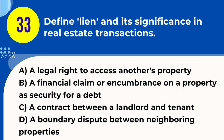Question 33. Define lien and its significance in real estate transactions. A. A legal right to access another's property. B. A financial claim or encumbrance on a property as security for a debt. C. A contract between a landlord and tenant. D. A boundary dispute between neighboring properties. Answer: B. A financial claim or encumbrance on a property as security for a debt. Explanation. A lien is a legal right or interest that a creditor has in another's property, usually lasting until a debt or duty that it secures is satisfied. In real estate transactions, a lien affects the property's title, and it must be paid off or resolved before the property can be sold.